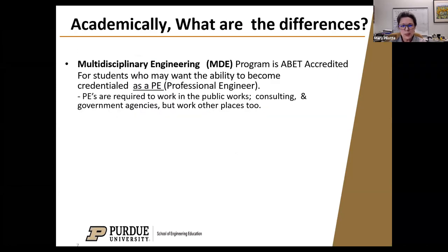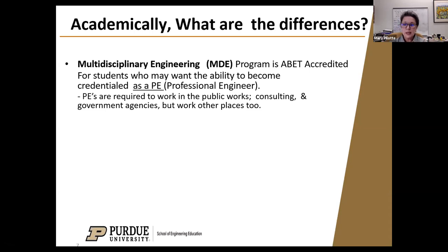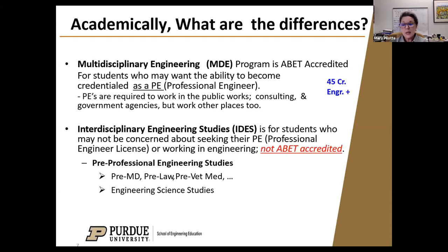Other important academic differences: a Multidisciplinary Engineering degree is ABET accredited. ABET is the accrediting body that makes sure engineering programs maintain the highest quality of engineering, and it has standards in terms of how much math, science, and engineering coursework you take. If you ever desire to become a professional engineer — a licensure you can seek — then you have to graduate from an ABET accredited program, and MDE is ABET accredited with 45 credits of engineering plus much more. The Interdisciplinary Engineering Studies program, alternatively, is not ABET accredited and you only have 30 credits of engineering.